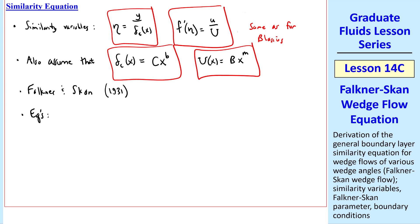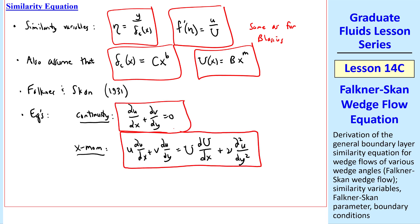Here are our equations in physical variables, continuity and x-momentum. And note that these equations are for our 2D laminar boundary layer, and we're assuming steady flow. And although these are the same similarity variables as with Blasius, here capital U is a function of x, not a constant.